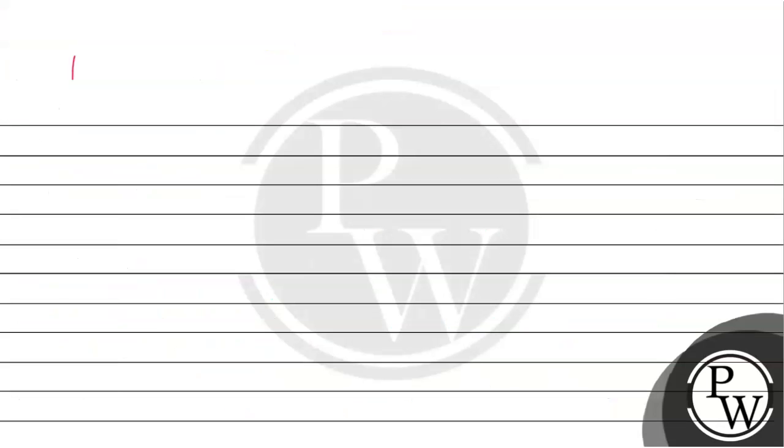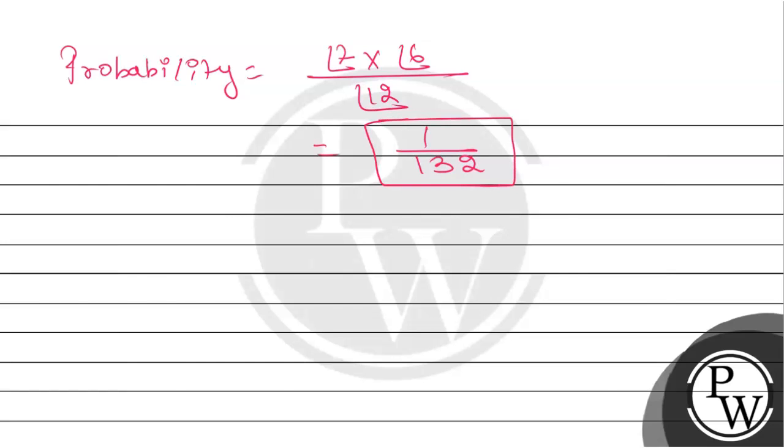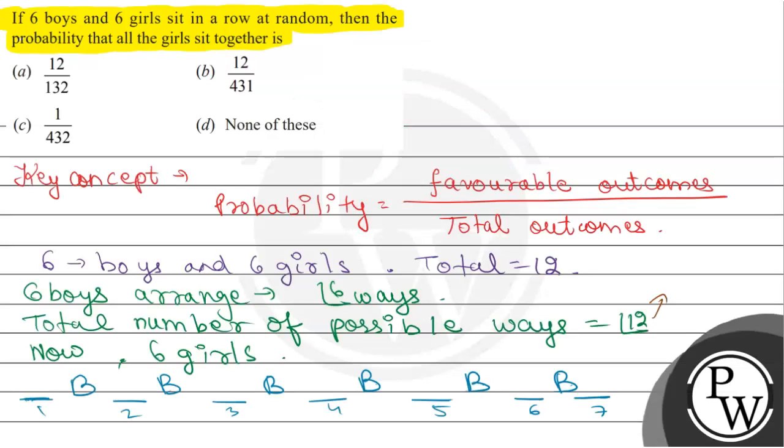So finally, probability is equal to factorial 7 multiplied by factorial 6 divided by factorial 12. So if we simplify this, we get 1 divided by 132. This is our final answer.